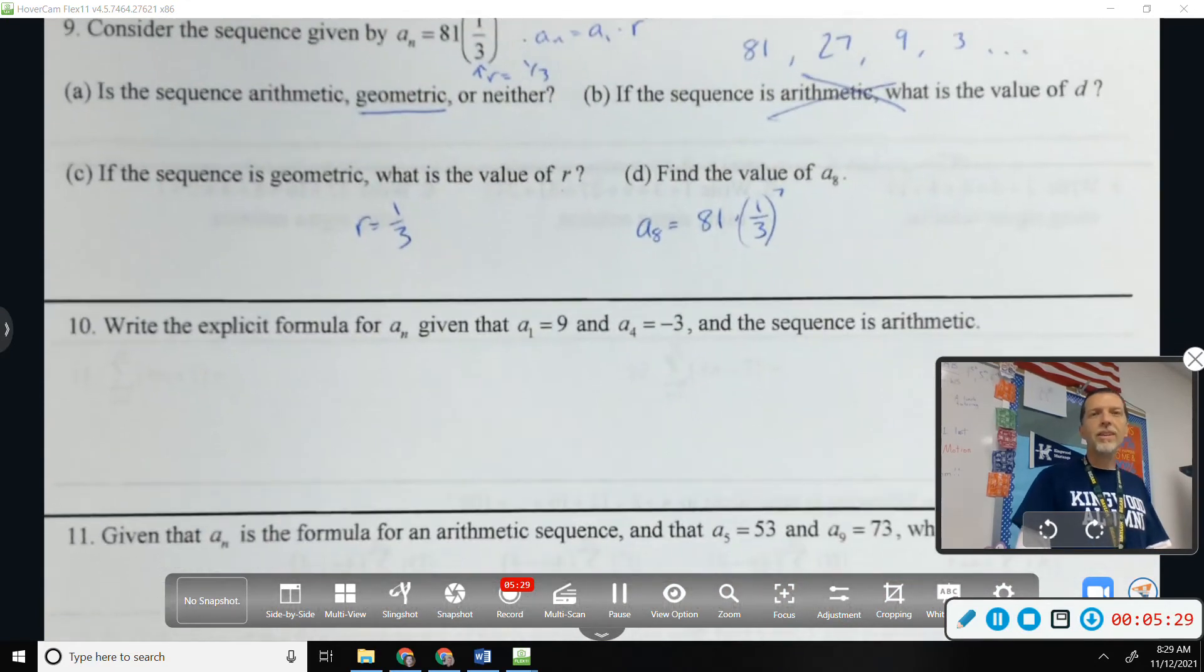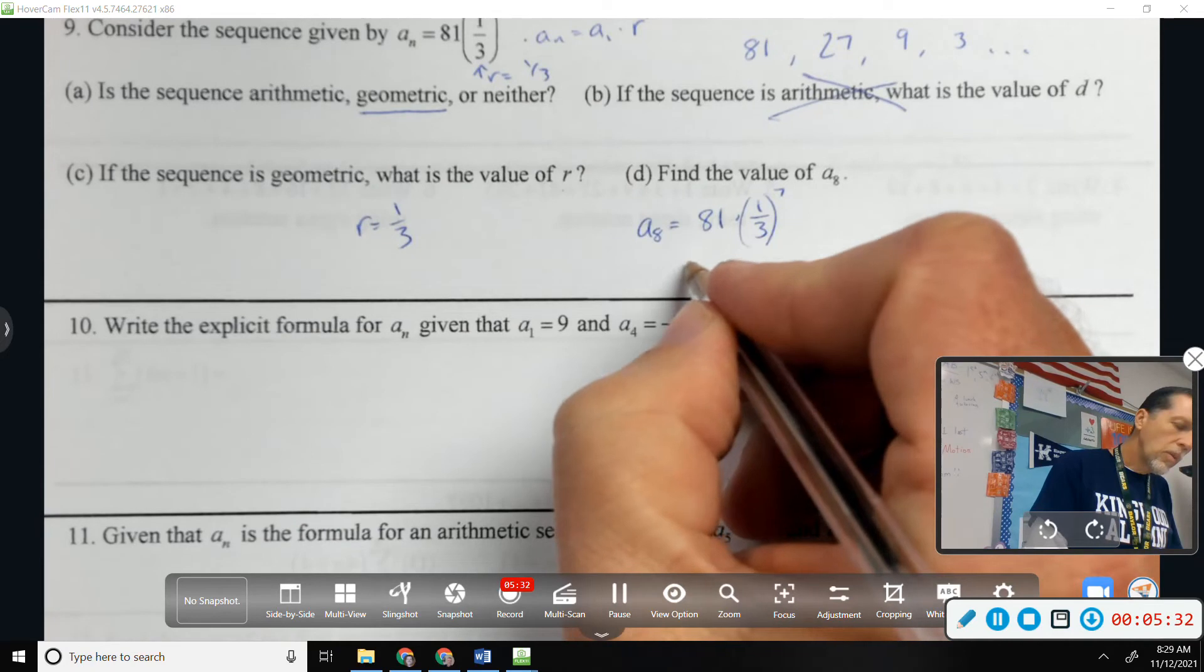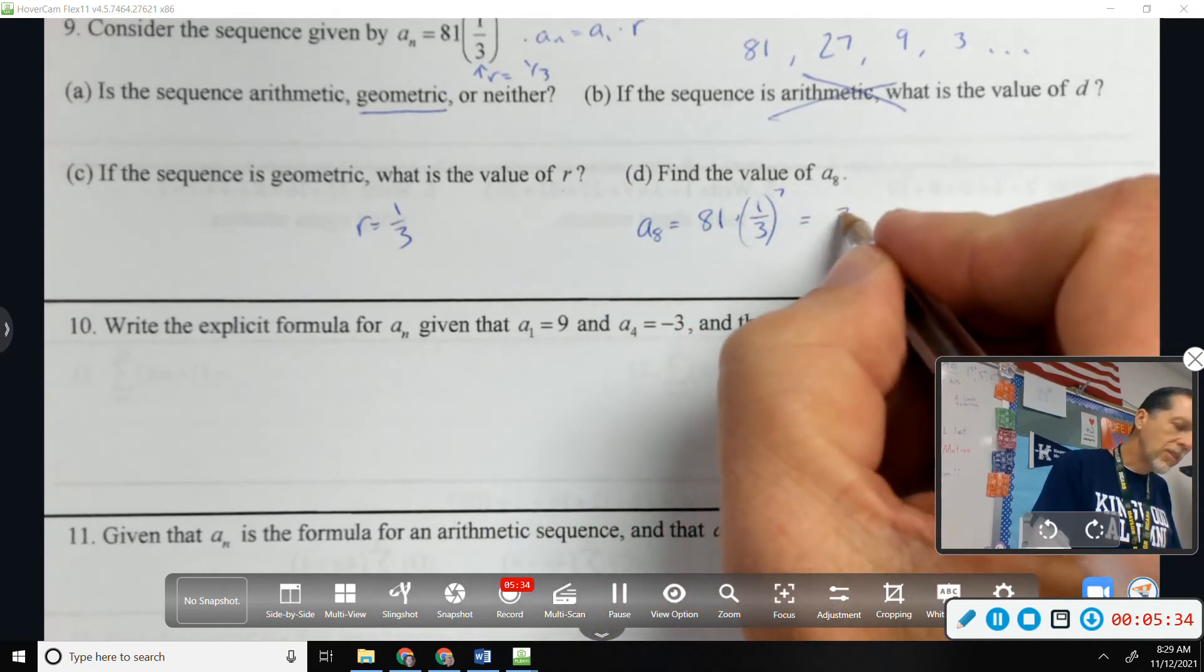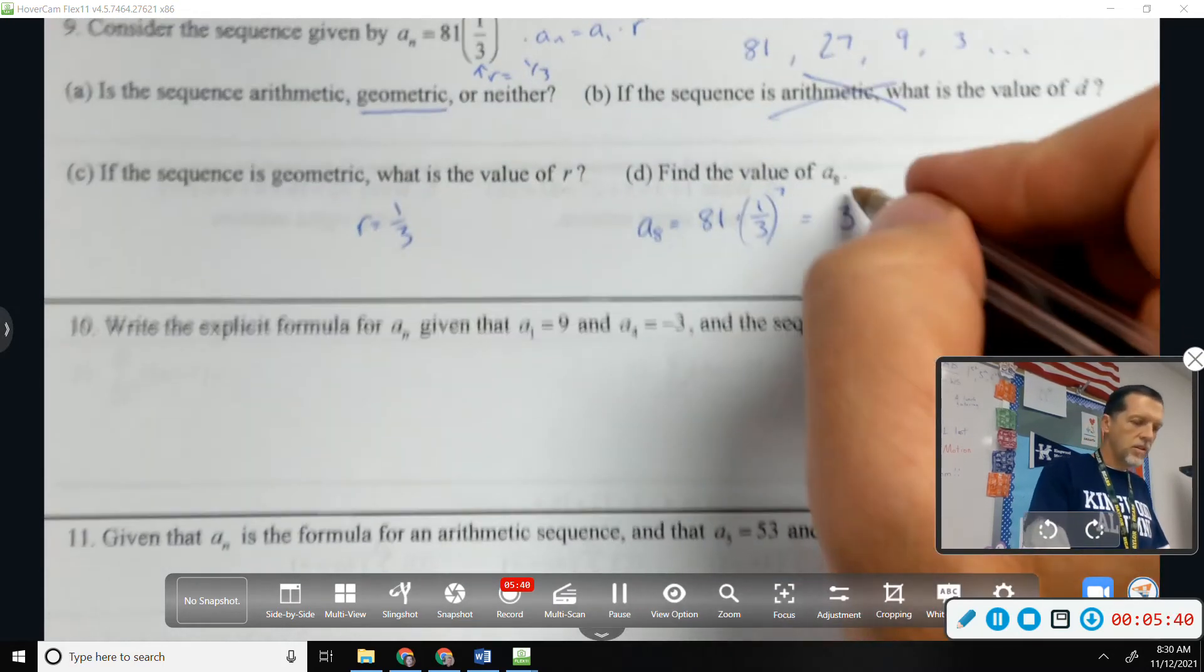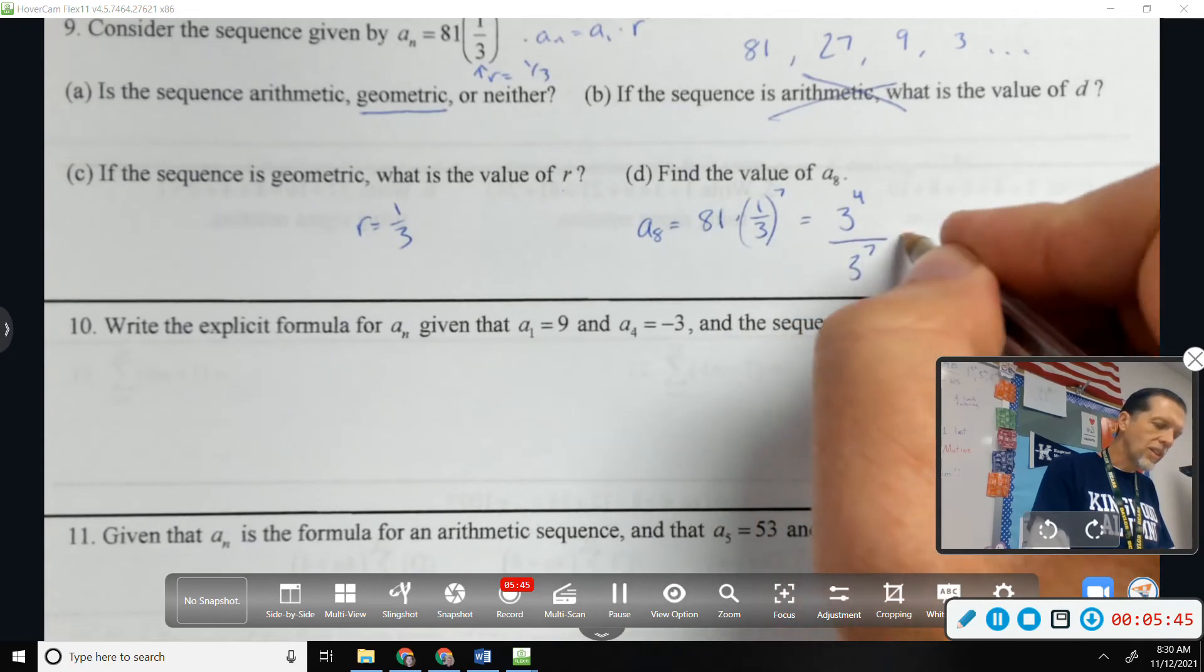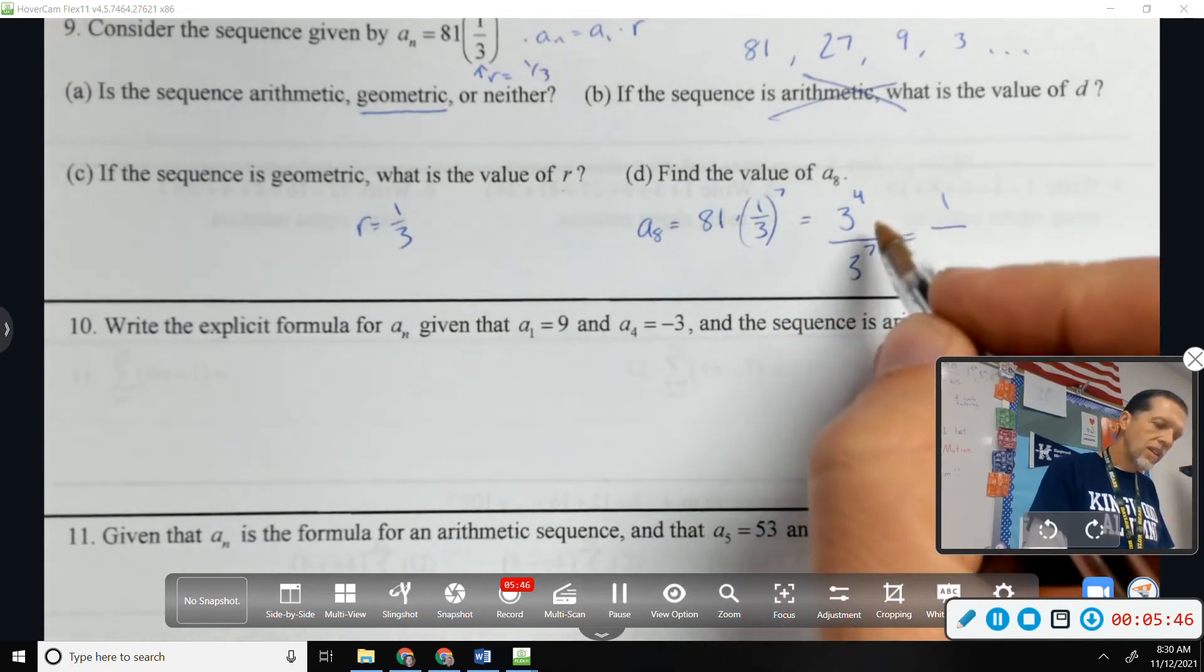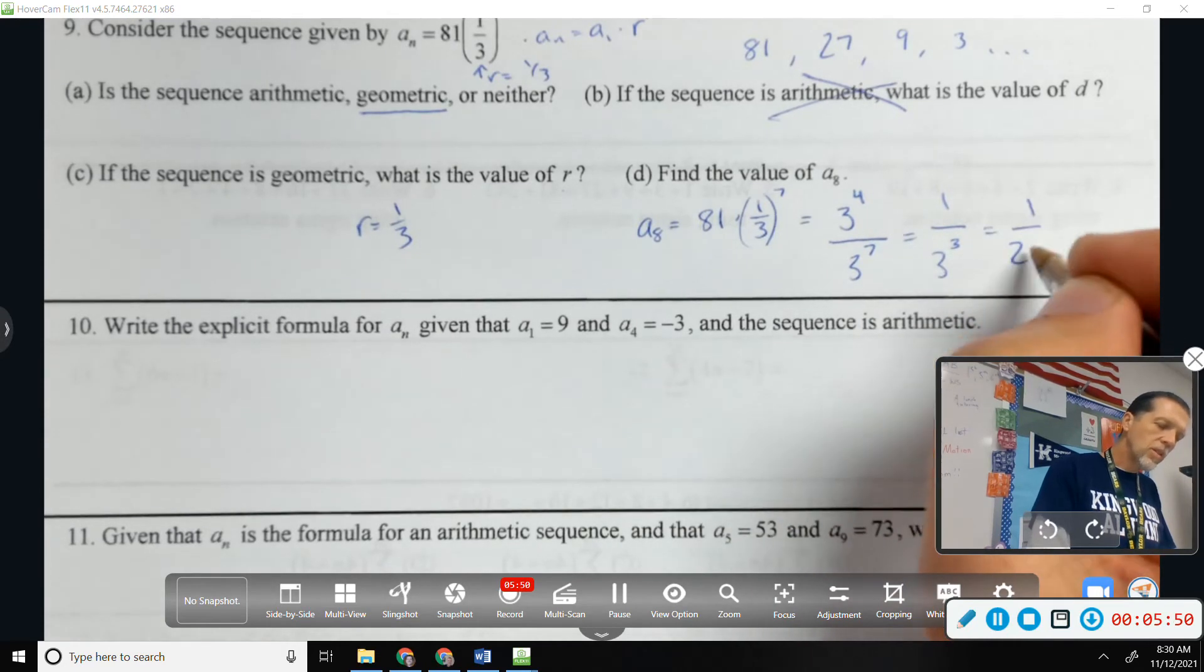So that would be 81 times one third to the seventh. Which, without a calculator. What's 81 as three to a power? We're going to work our way backwards on this one. Three to the fourth. Over three to the seventh. Seven minus four is three. So one over 27.